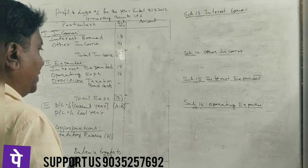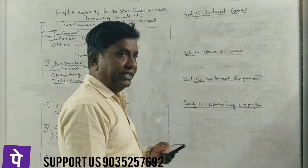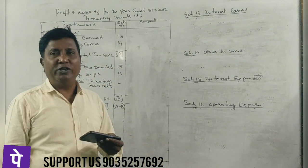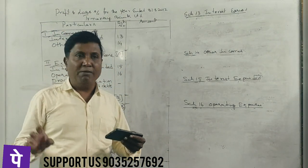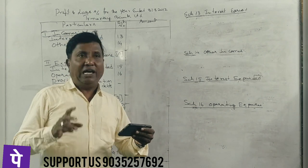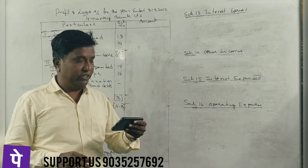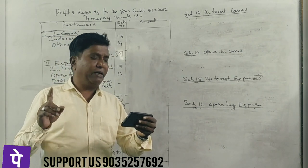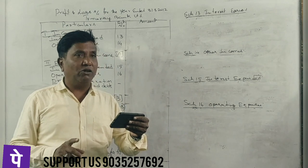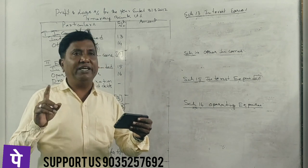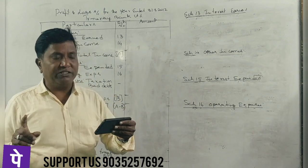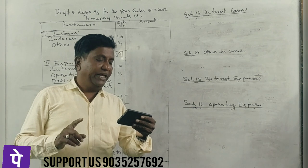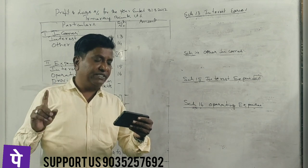I have one more program for 5 marks and 6 marks from accounting for banking companies. I will read out this question. From the following particulars, prepare profit and loss account of Citibank for the year ending 31st of March 2011. Interest on fixed deposit: